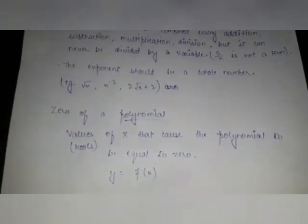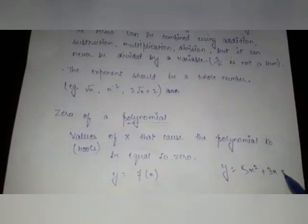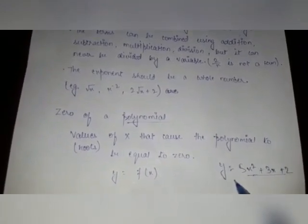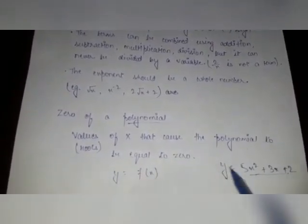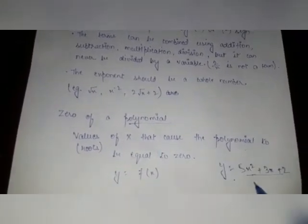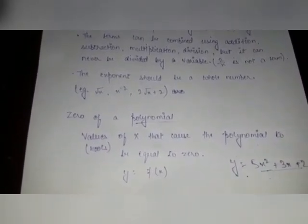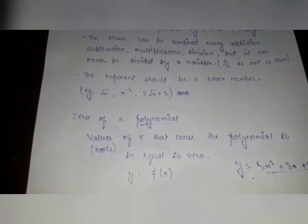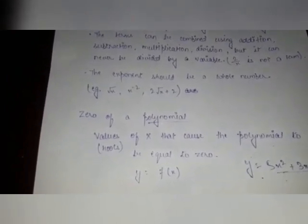Now we come to the topic of the zero of a polynomial. Suppose we have a polynomial 5x² plus 3x plus 2. Whatever value of x we put here that makes y equal to zero — that value of x is known as a zero of the polynomial. Looking at the graph, wherever the curve intersects the x-axis, all those points are known as zeros of the polynomial. In Exercise 2.1 of our book, we have to identify how many zeros a polynomial has.